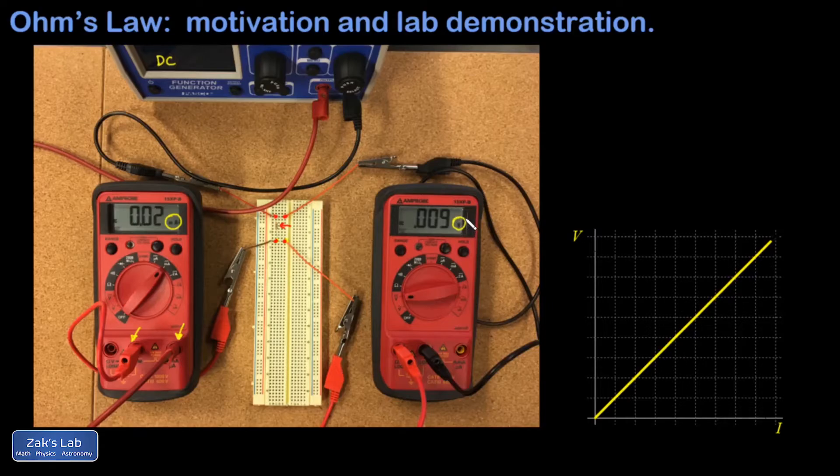Our goal here is to take 10 data points. I'm just using integer values of voltage from 1 to 10, and we want to make a plot of voltage versus current through this resistor.